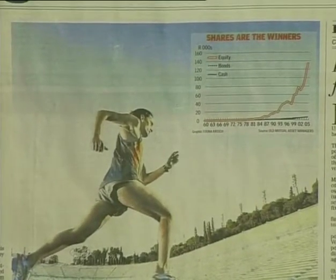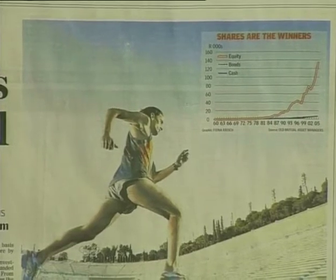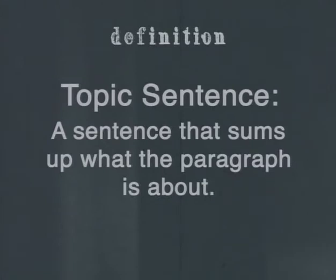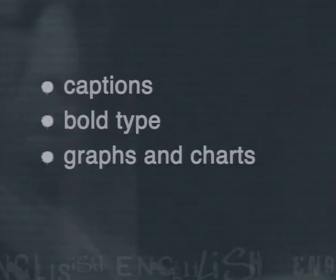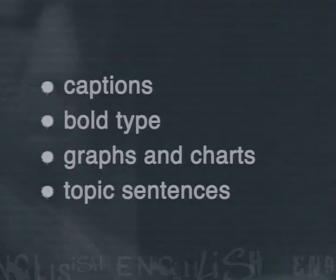Newspaper articles may also include graphs or tables of statistics — scanning your eye over these will also give you clues about what the text is about. You can also run your eye over the passage and look out for the topic sentences, as each paragraph usually begins with one. A topic sentence is a sentence that sums up what the paragraph is about. Just reading the first sentence of every paragraph would give you quite a good idea of what the article or passage was about. As we have seen, you can get clues from the source, the title, the pictures, the captions, bold type, and graphs and charts — all before you even start to read the text.